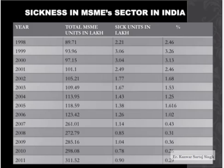Looking at sickness in the MSME sector in India: in 1998, total MSME units were 89.71 lakh with 2.21 lakh sick units, giving a percentage of 2.46%. The percentage has continuously fluctuated, with data available till 2011. Total MSME units are increasing, and though the percentage of sick units fluctuates, it is important to understand that to keep your company afloat, you must be very aware of all related factors in this competitive scenario.